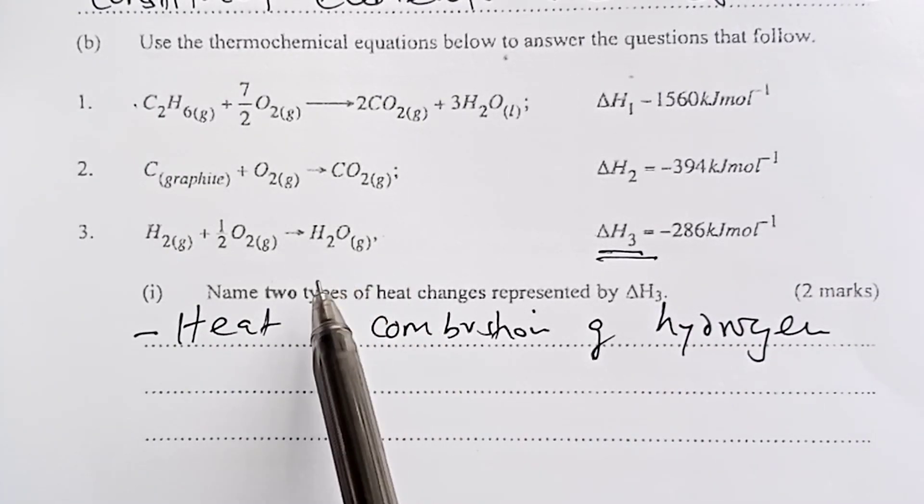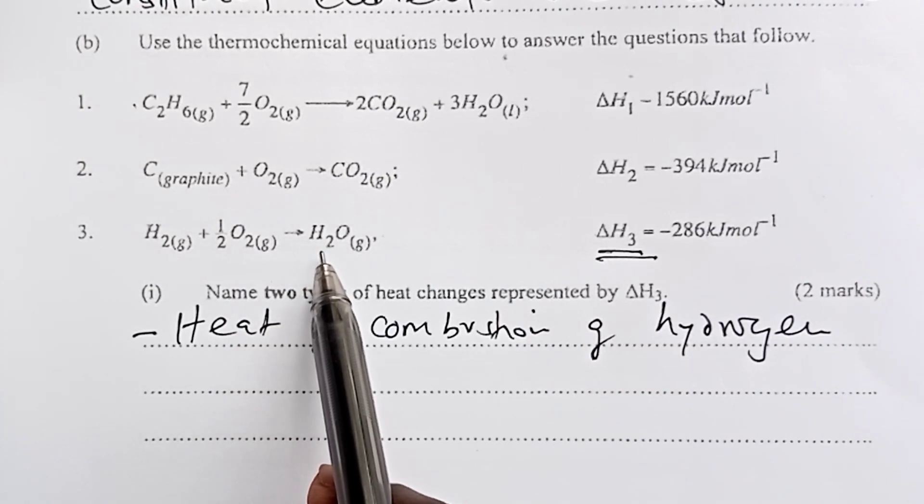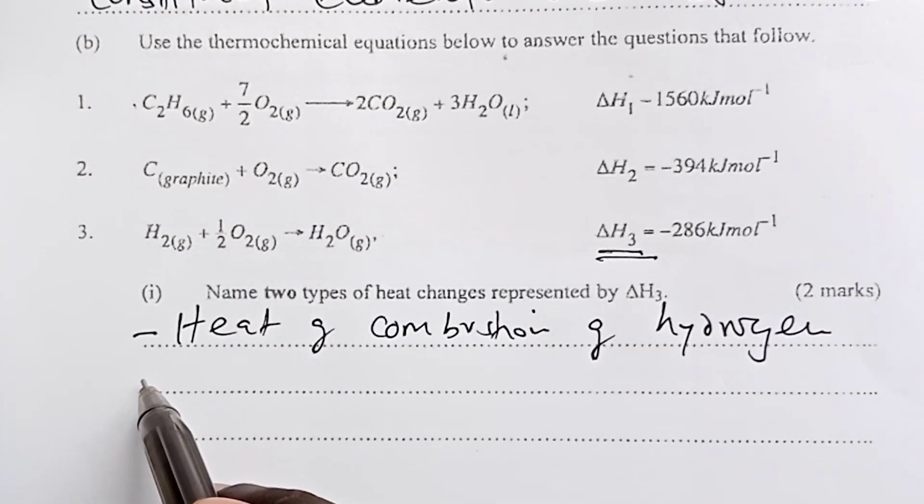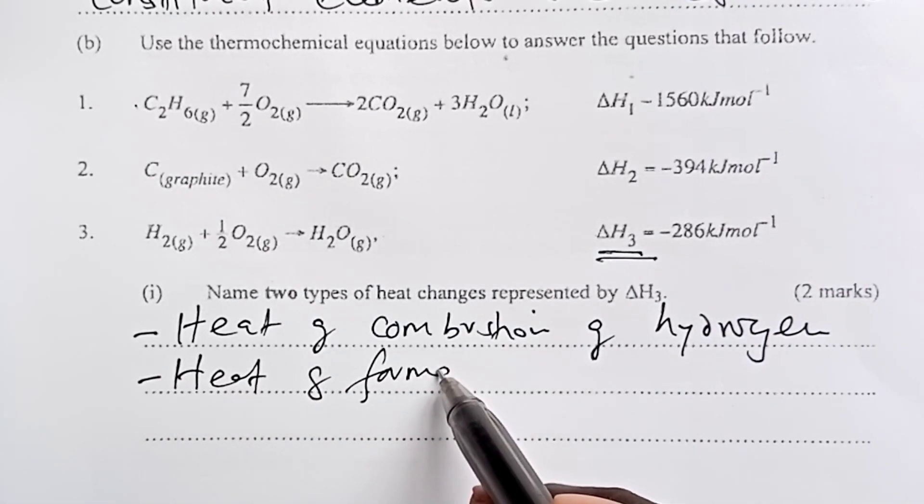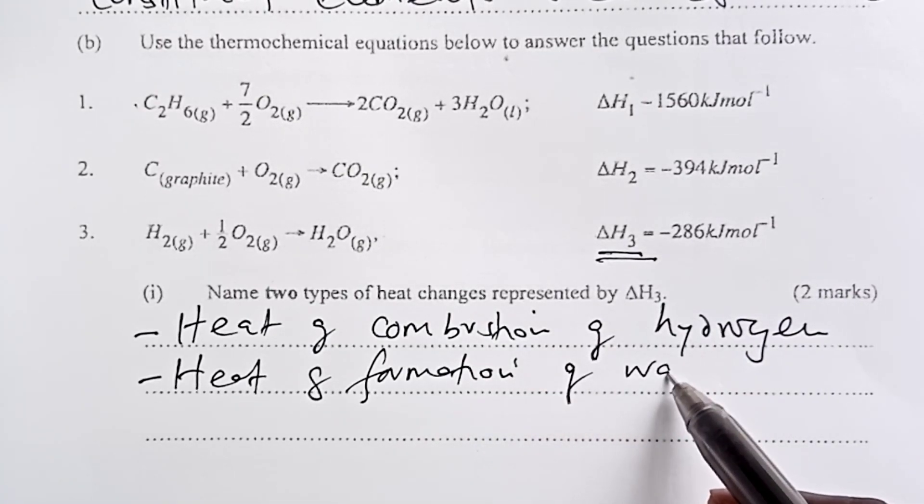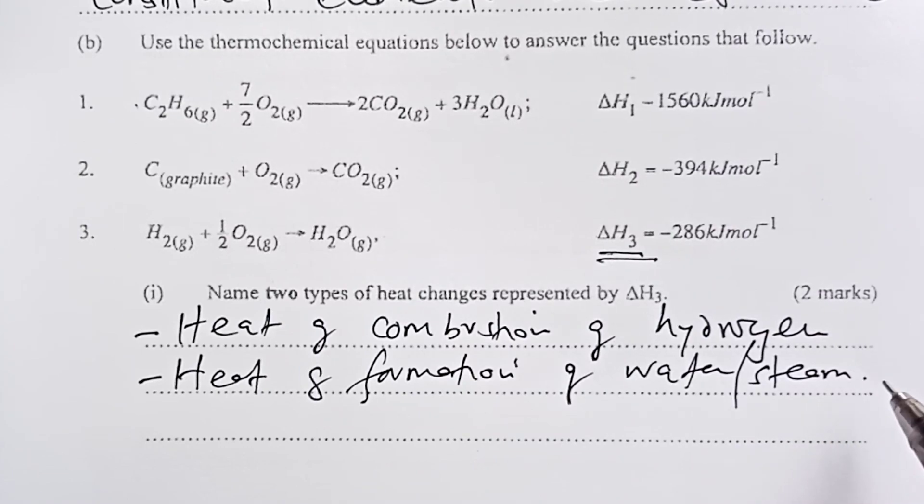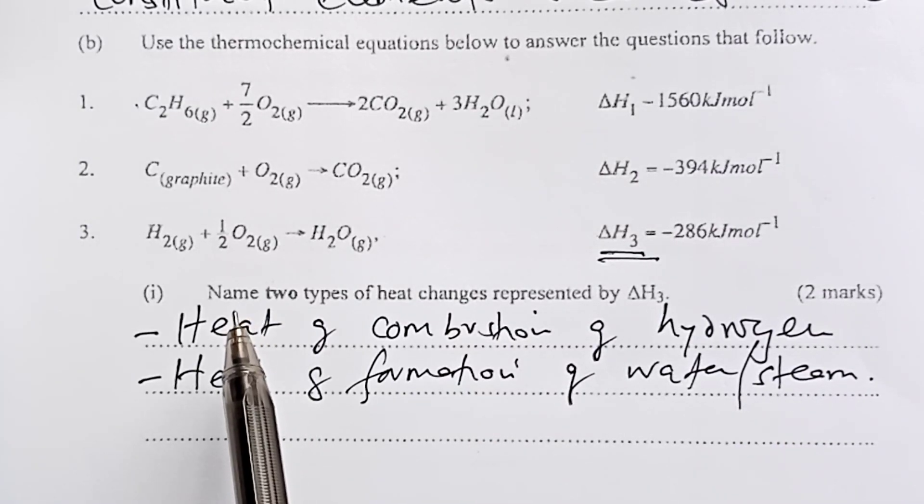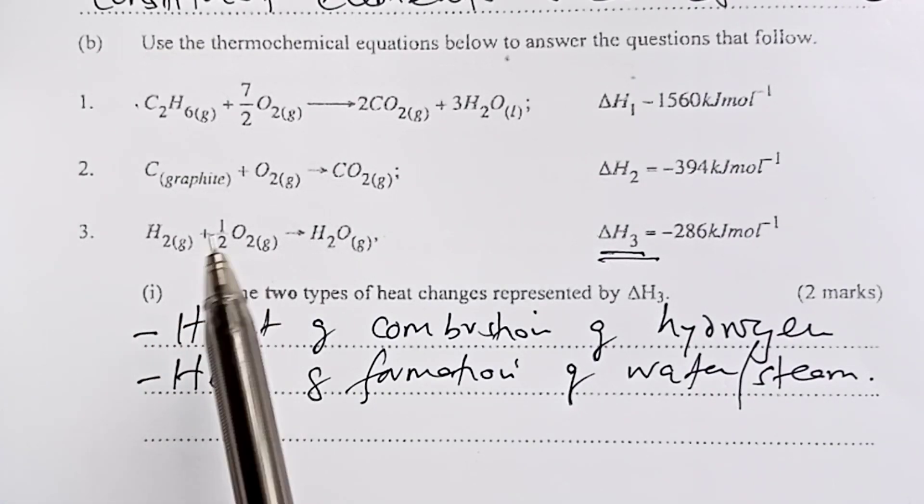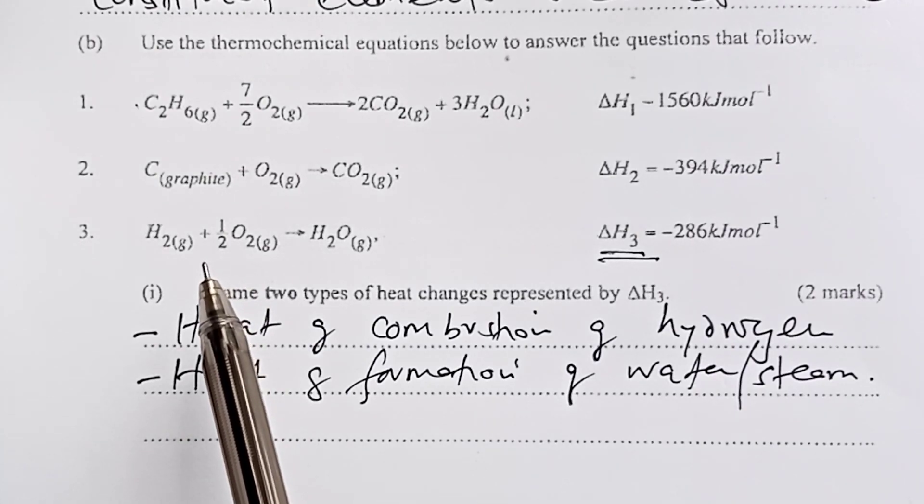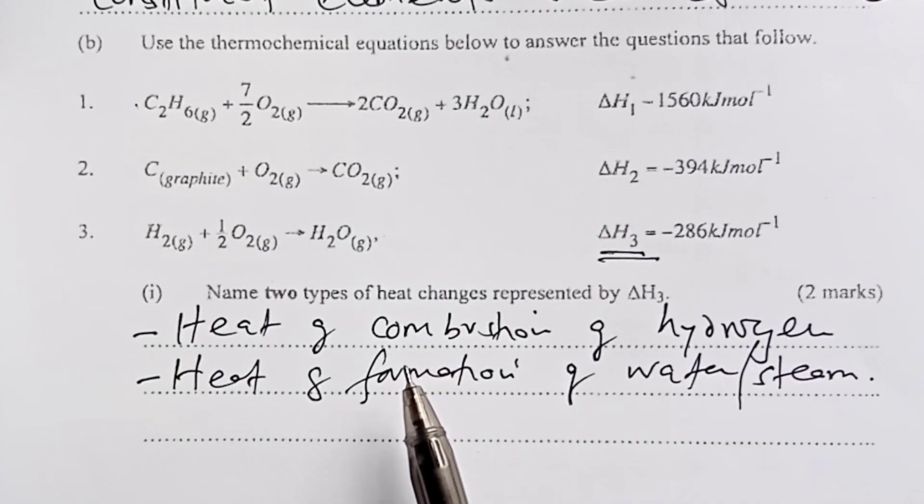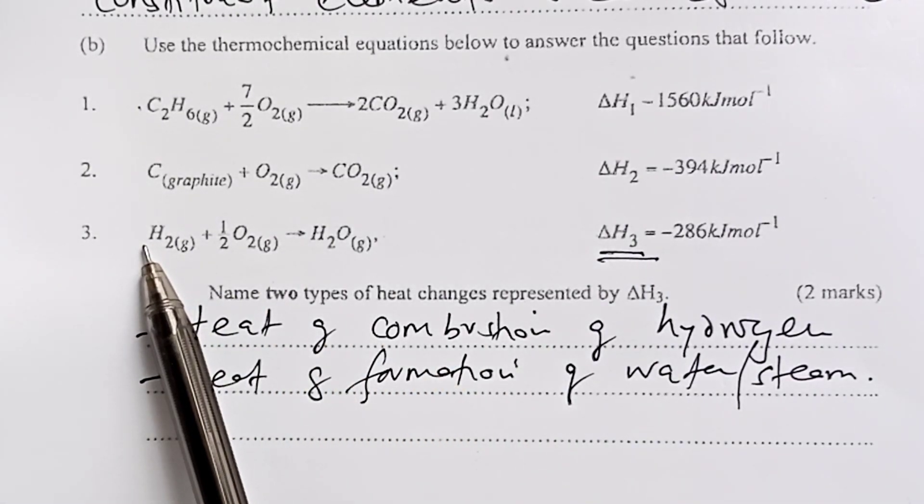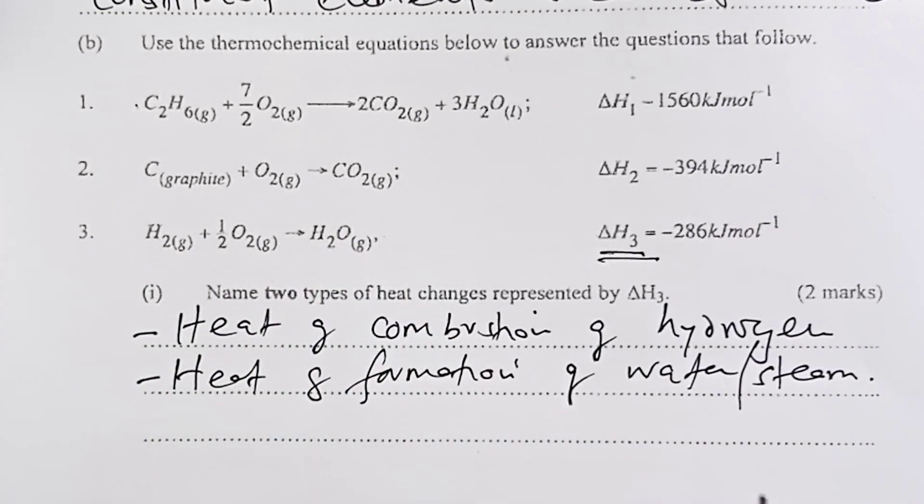But then if you look keenly, we are also forming only one mole of steam. So again, this can be called heat of formation of water or steam. Because we have explained that for purposes of preserving certain number of moles in our reactions, we shall be able to use fractions in balancing. So why these two? It's because we are burning one mole of hydrogen. And again, we are also forming one mole of water.